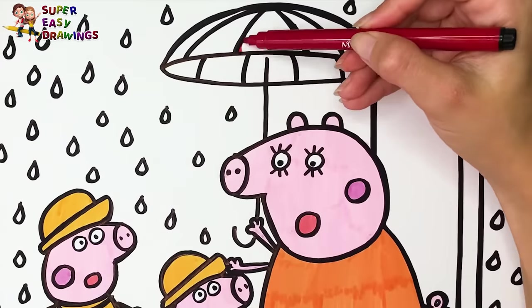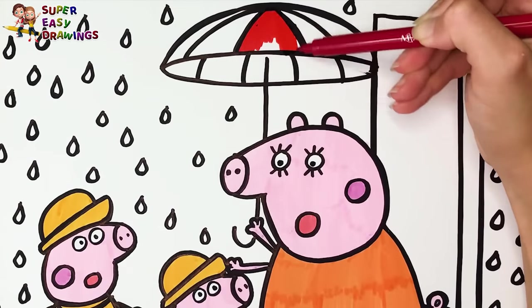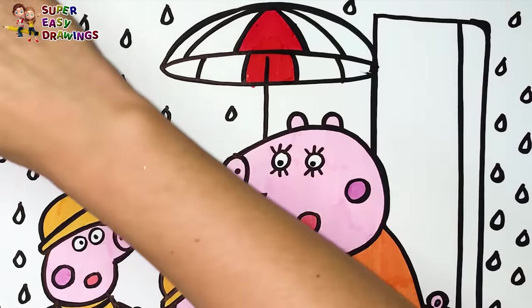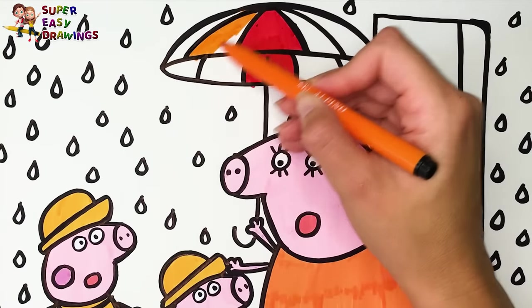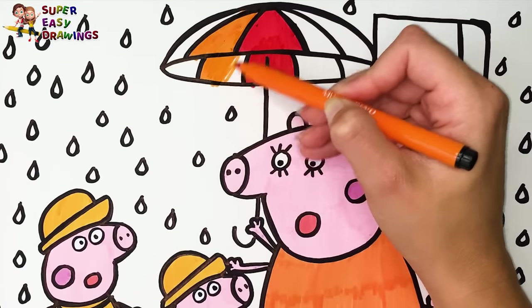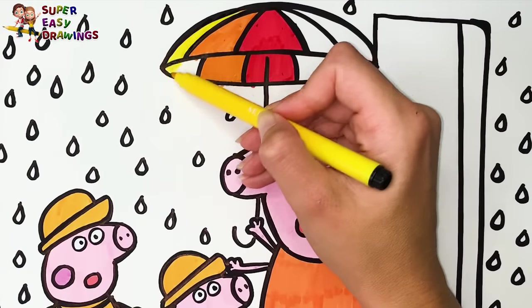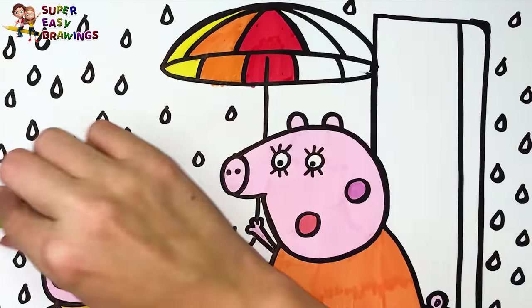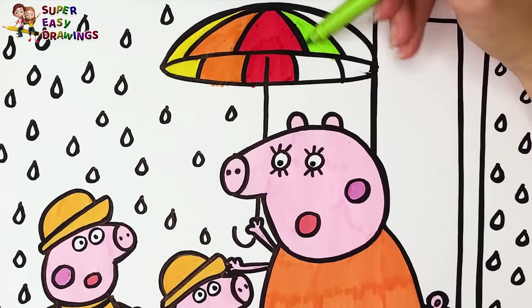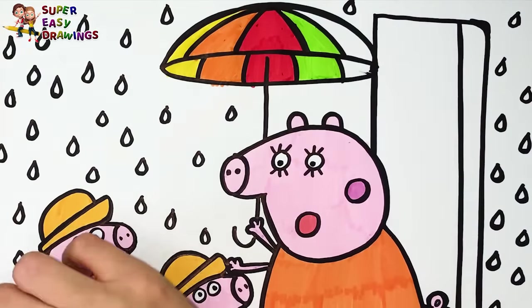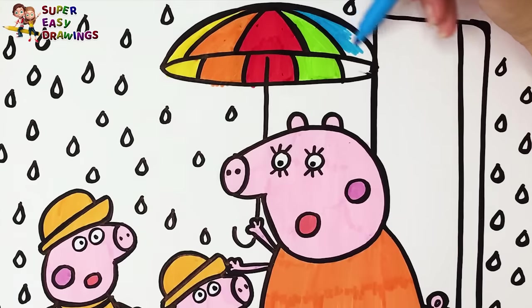Now I am going to color the umbrella with the colors of the rainbow. I start with red, then I use orange. After that comes yellow. Now some green, and finally I use blue.